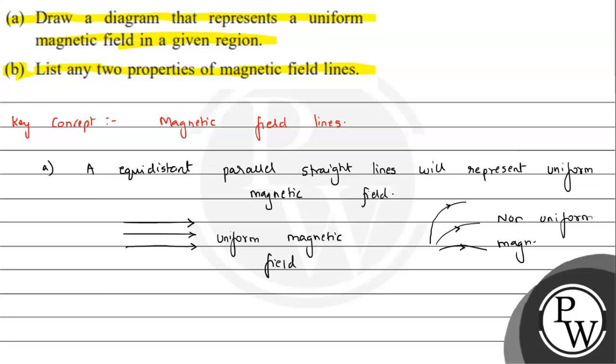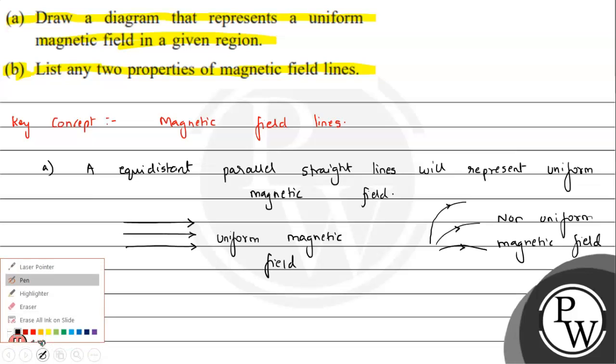So this is the answer to the first part of the question. Now we can list any two properties.